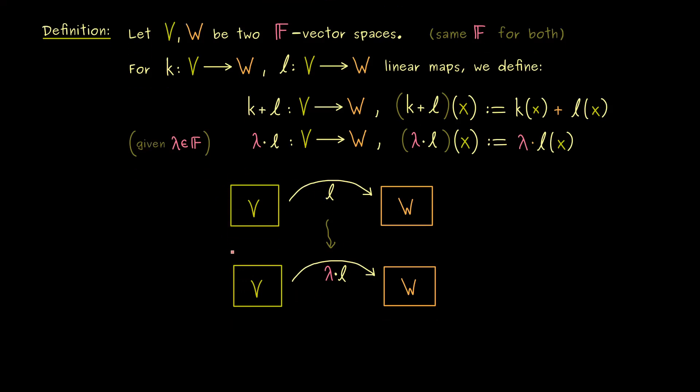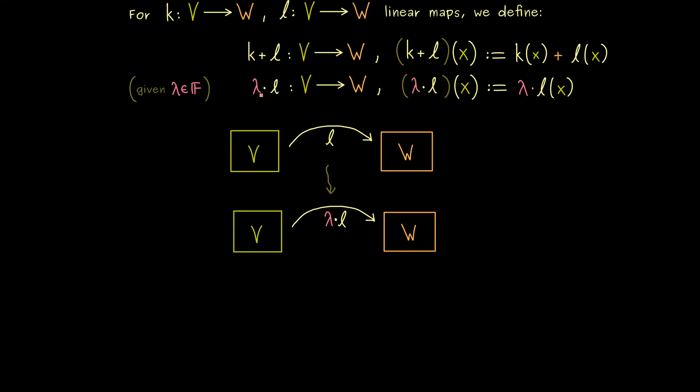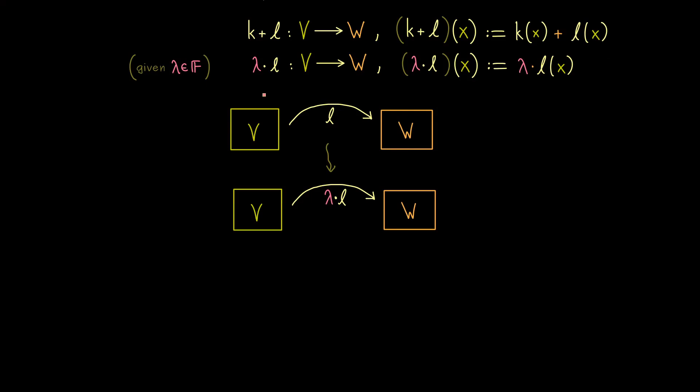However, if we also have the vector space structure here on the left-hand side, then the term linear makes sense. And now the really nice result here is that the new maps we define here are also linear maps. In fact, this is something you can check. k plus l, for example, still satisfies the two properties for a linear map. And of course, this is exactly what we want to have. If we already have linear maps, we want to form new ones.